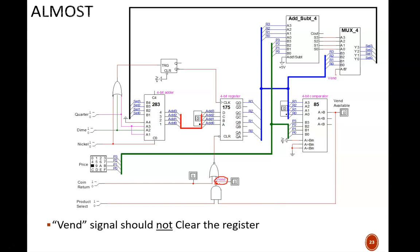The next mistake is that this Vend signal should not clear the register like it did before. We want the Vend signal to tell the MUX to accept the change value, which is then stored in the register. If we also simultaneously force clear the register, we lose that change we worked so hard to compute.